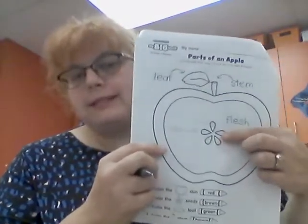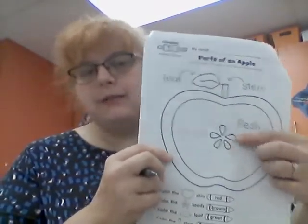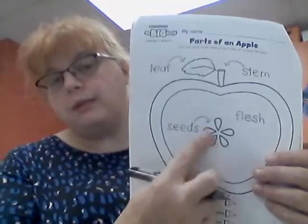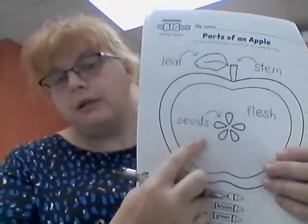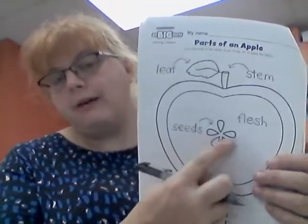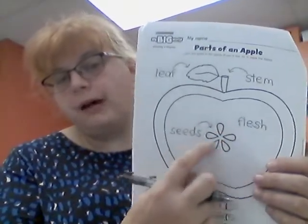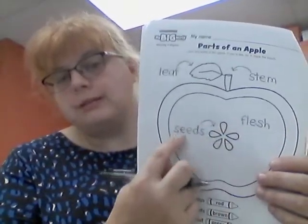And then we have seeds. We call it seeds — S-E-E-D-S — because there's more than one. If there was just one, then it would be seed. But because there's five of them — one, two, three, four, five — we call it seeds.